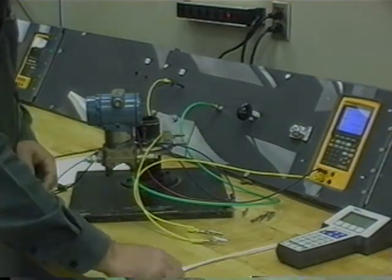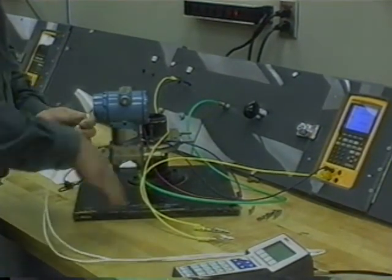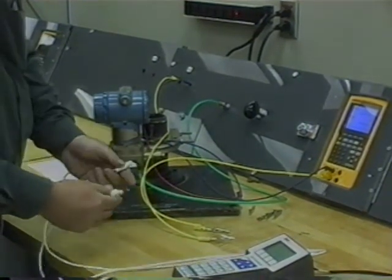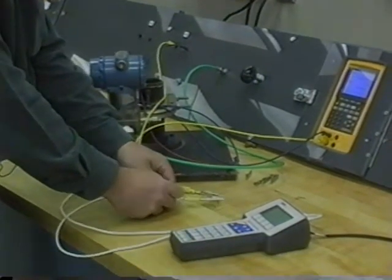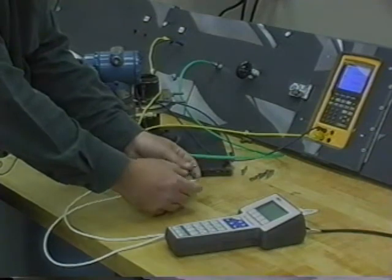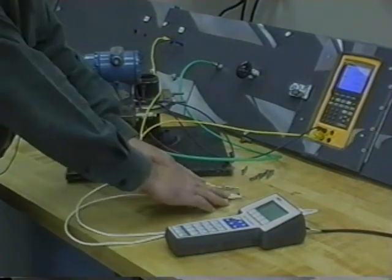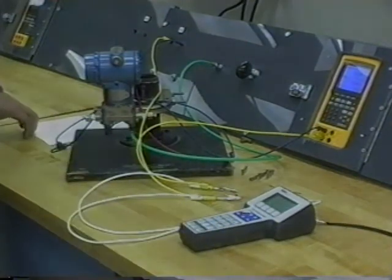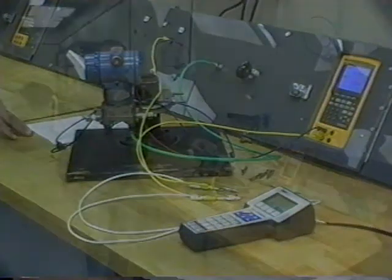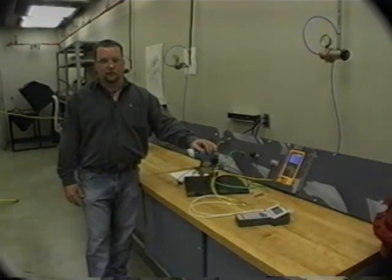Next, we want to make sure that our HART communicator is connected anywhere in the series loop in parallel. The easiest way to do that is just to go directly across the resistor. Now that we're sure everything's connected properly, we can power it up.